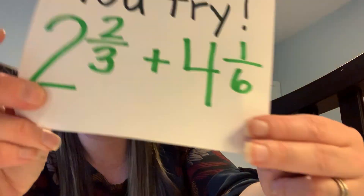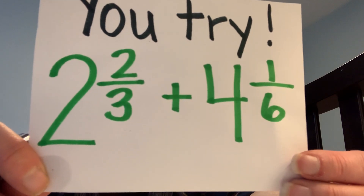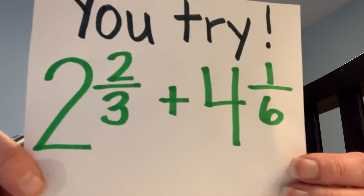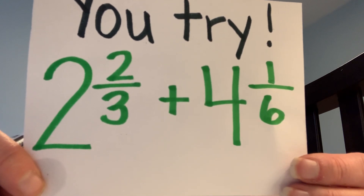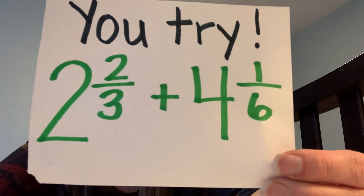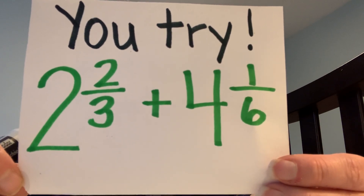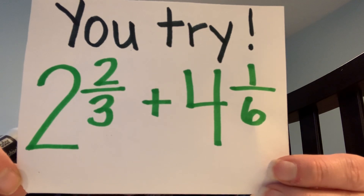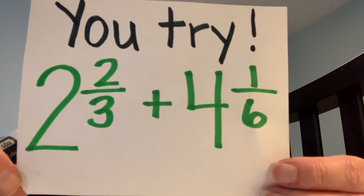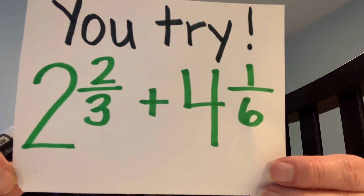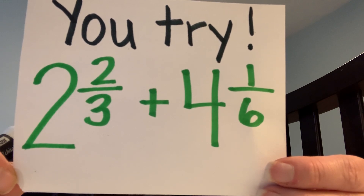Why don't you give one a try now? Here's one for you: two and two-thirds plus four and one-sixth. You should be looking at your denominators, thinking about which multiples they both have and what is the common multiple you could change the denominators to. Whatever you do to your denominator, you then have to do to your numerator. If you need more time, press pause and resume when you're caught up.